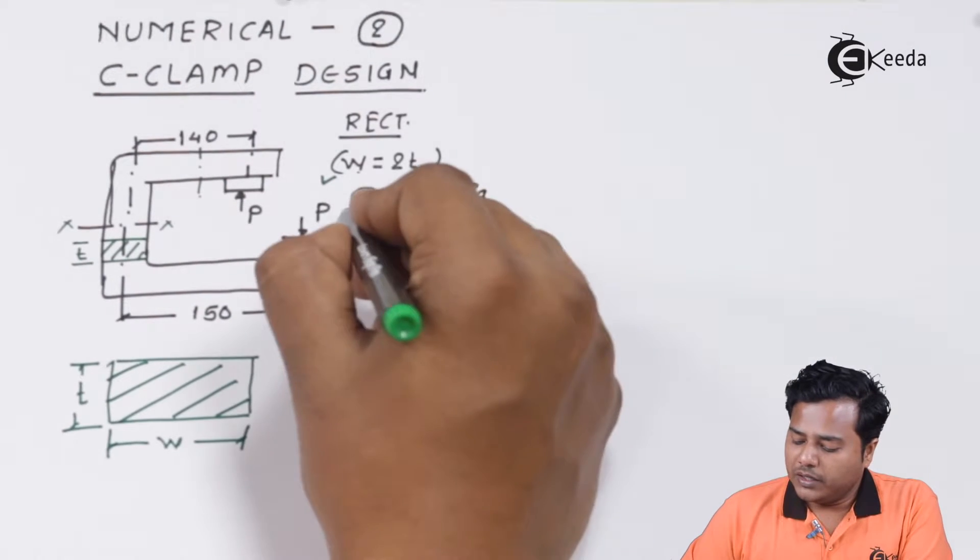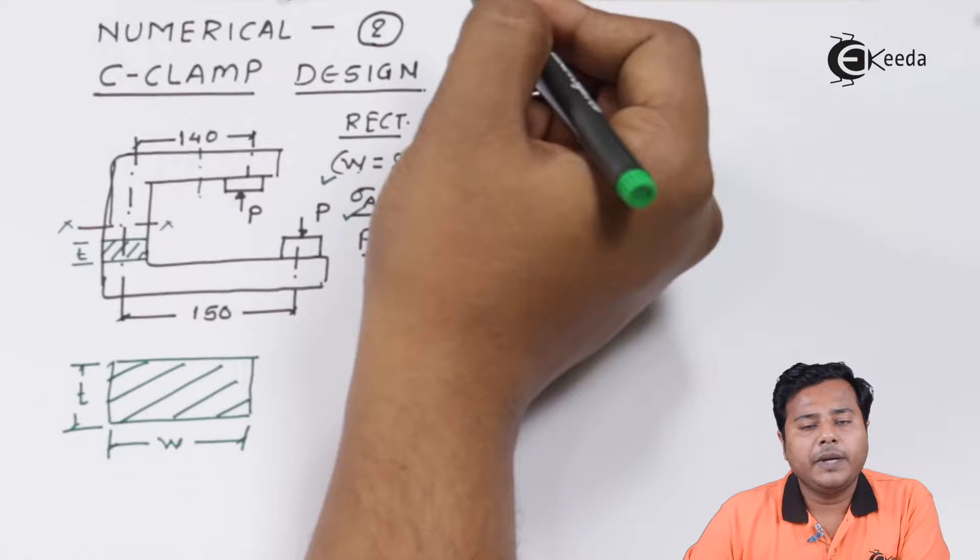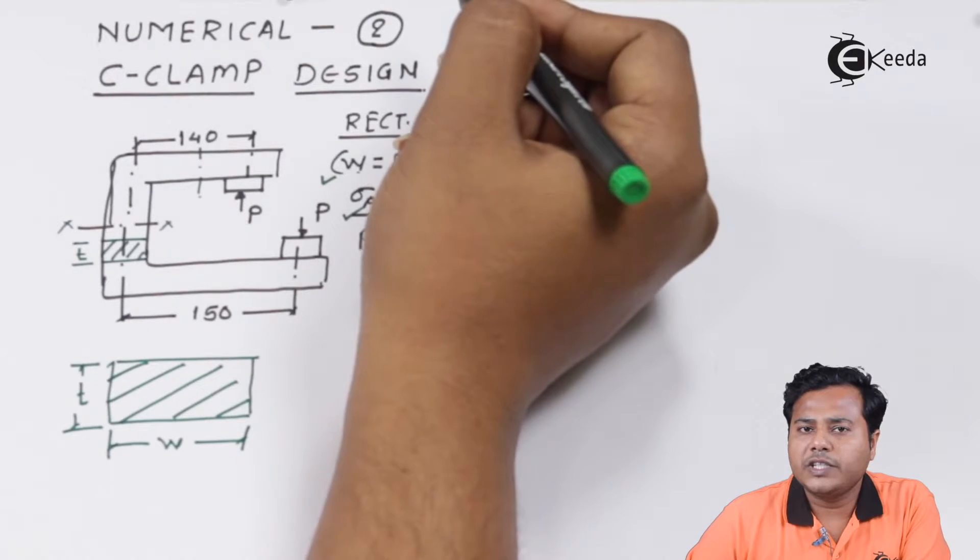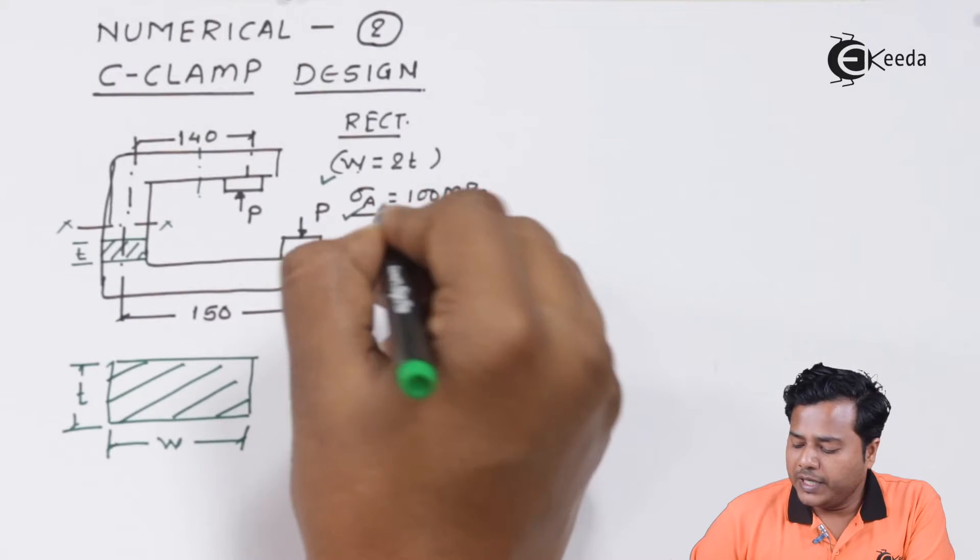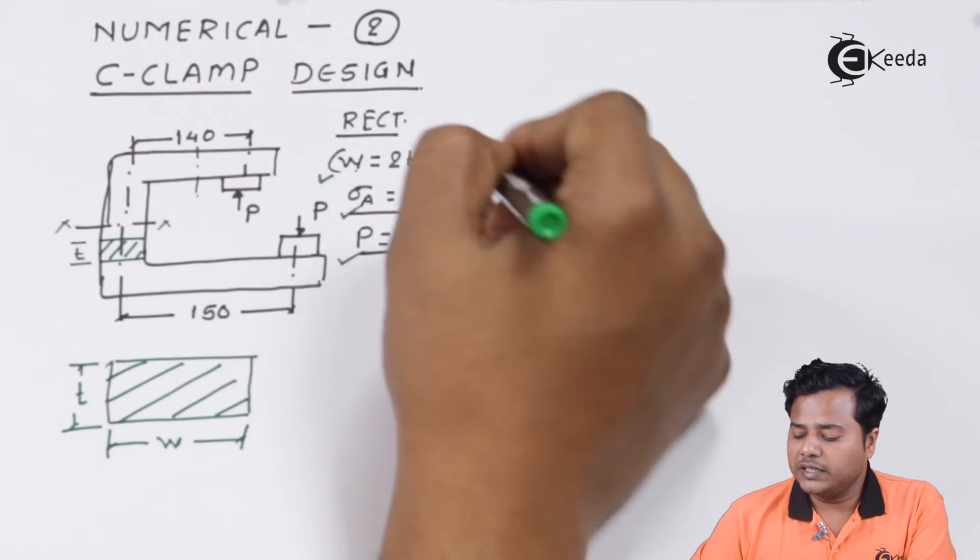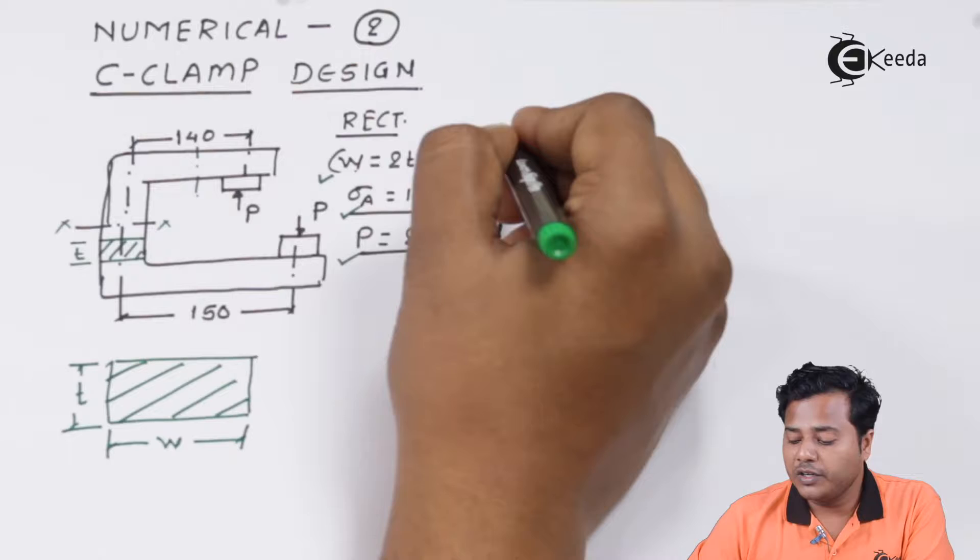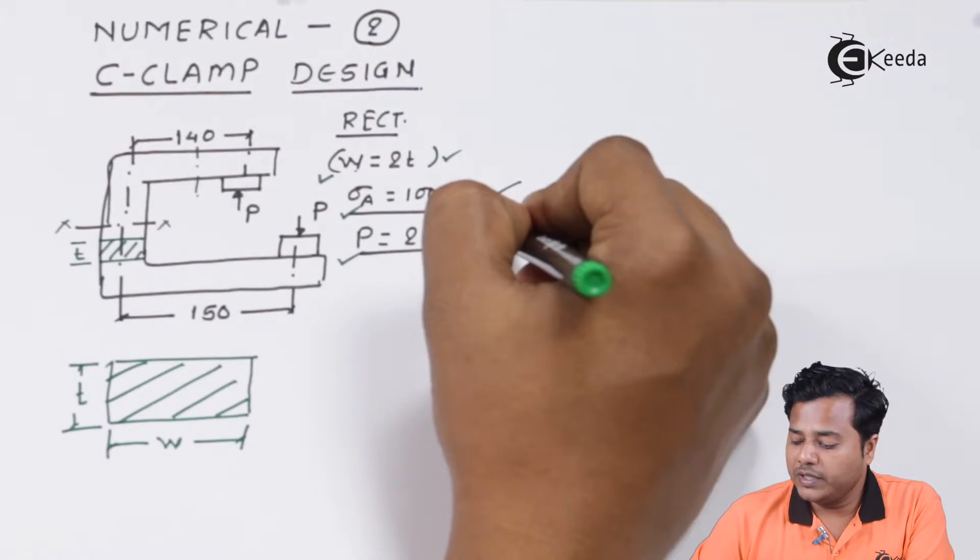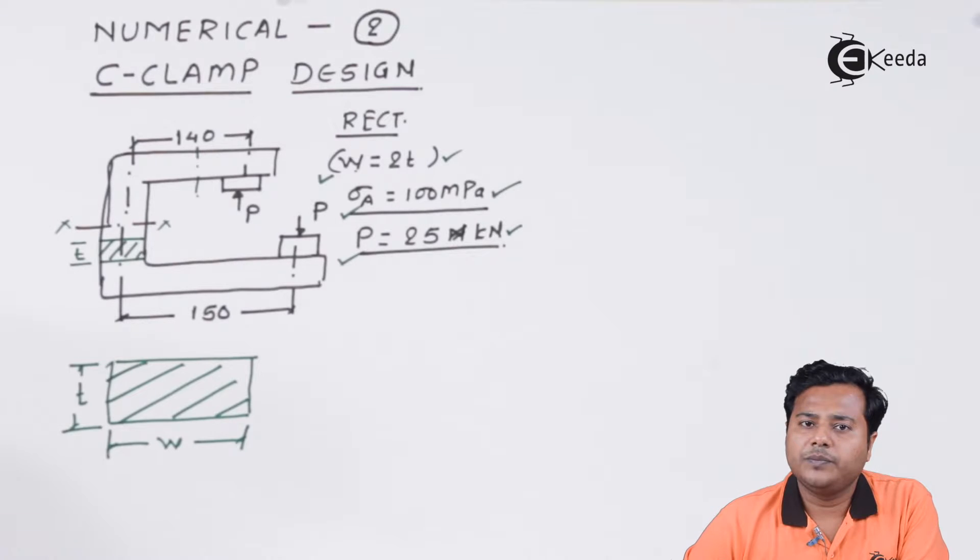We have been given an allowable stress of 100 MPa for this particular C-clamp and the maximum load that is going to act on C-clamp. The input parameters are dimensional relation, material property, and applied boundary condition. With respect to this, we need to find out the dimensions. The comparison is between the allowable stresses.